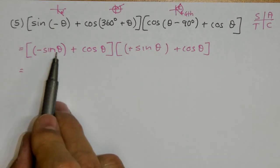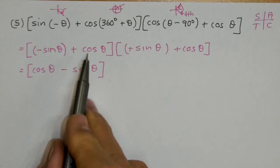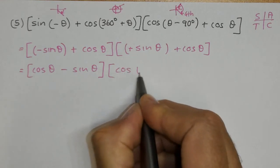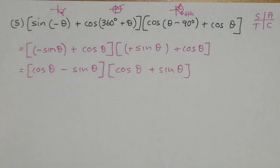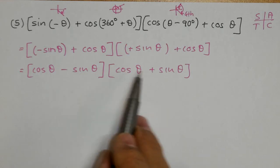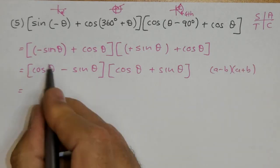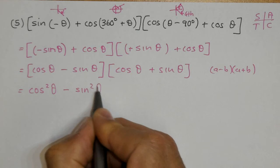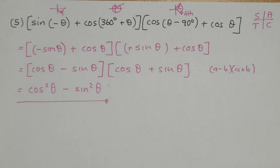We have minus sine theta plus cosine theta, which we can rewrite as cosine theta minus sine theta. Multiplied by cosine theta plus sine theta. This is the form (A minus B)(A plus B), which equals A squared minus B squared. In this case, that gives cosine squared theta minus sine squared theta, and we can't simplify further.